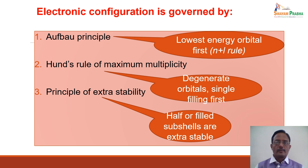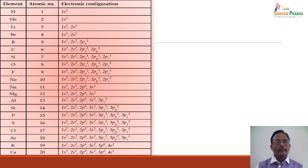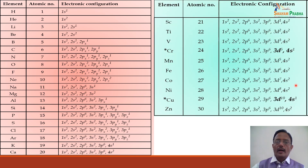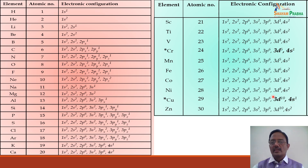In summary, electronic configuration is governed by three principles: Aufbau principle (electrons fill in increasing energy order by n+l rule); Hund's rule of maximum multiplicity (degenerate orbitals fill singly before pairing); and the principle of extra stability (half-filled or completely filled subshells are extra stable). For elements up to atomic number 30, there are two anomalies — chromium and copper — where an electron shifts from 4s to 3d due to extra stability of the 3d⁵ and 3d¹⁰ configurations.